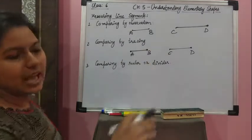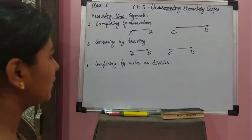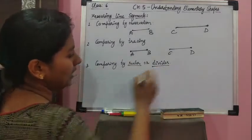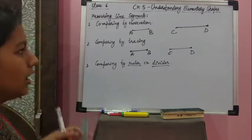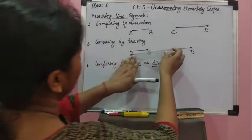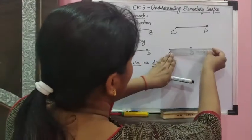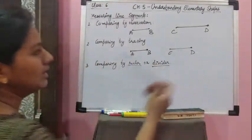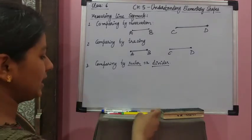Now these are the approximate methods. One exact method of comparing line segments is by ruler or by divider. Ruler is simply your scale. By scale I can measure — I can see this is 8 cm, and putting it on the other I find this is 10 cm. Then CD is bigger. So by using a ruler it is very easy.